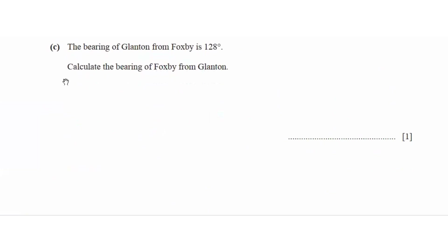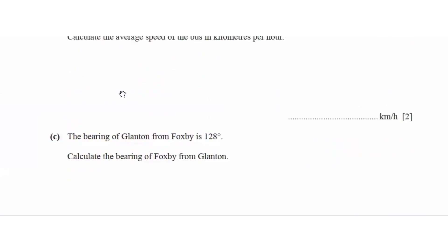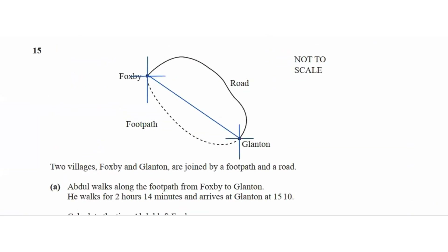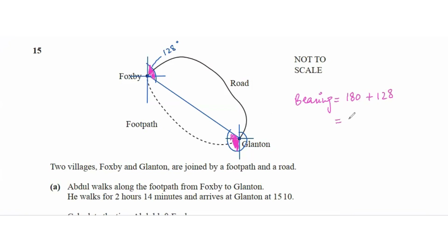The bearing of Glanton from Foxby is 128. Find the bearing of Foxby from Glanton. In parallel lines, alternate angles are equal, so this angle equals 128. The bearing will be 180 plus 128, which is 308. That is your bearing.